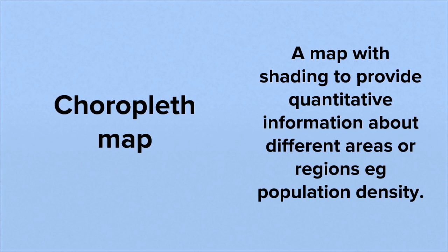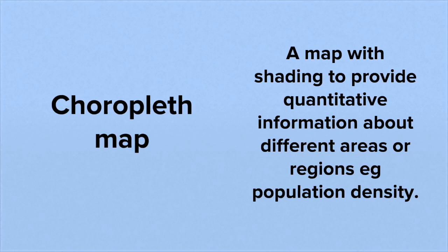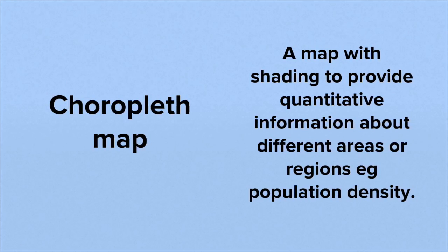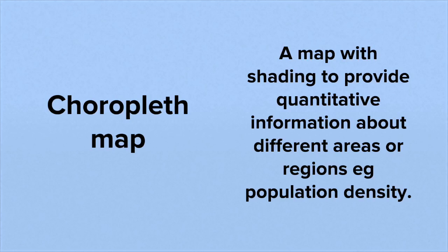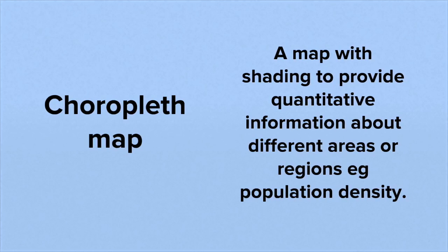Next we have a choropleth map. This is a map which uses shading to provide quantitative information, that means how much or something about different areas or regions, so for example population density.